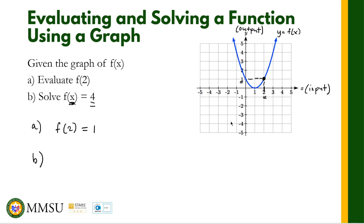For part b, we need to find the input value x when the output value equals 4. Looking at the graph where the output is 4, there are two input values: this point corresponds to an input value of negative 1, and the other point corresponds to an input value of positive 3. Therefore, x equals negative 1 and x equals 3. That's how you evaluate or solve a function using graphs.